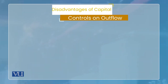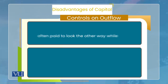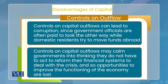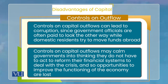اسی طرح ایک اور problem یہ ہو سکتی ہے کہ جب capital control کی policy adopt کریں گے تو اس سے corruption زیادہ ہو سکتی ہے۔ کیوں؟ اس لیے کہ capital outflow کو روکنا government کے لوگوں نے ہے — تو ایسا ہو سکتا ہے کہ جو لوگ capital کو باہر لے جانا چاہتے ہوں، وہ رشوت دے کر government officials کو اپنا سرمایہ باہر لے جائیں۔